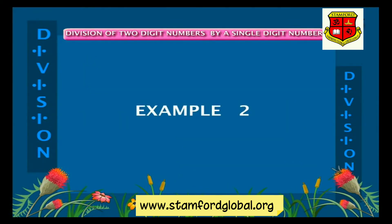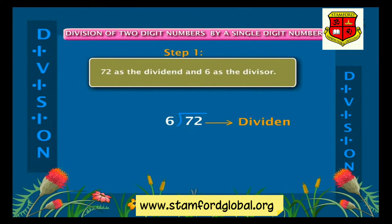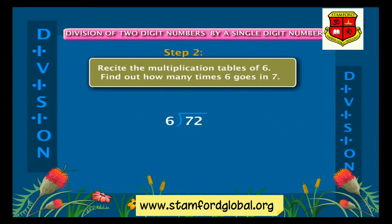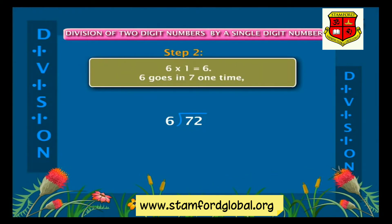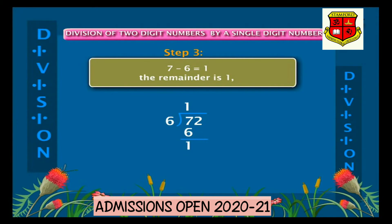Example two: divide seventy-two by six. Arrange the numbers — seventy-two as the dividend and six as the divisor. Recite the multiplication tables of six. Six into one is equal to six, so six goes into seven one time. Write one above seven in the quotient place and write six below seven. Seven minus six is equal to one, the remainder is one.